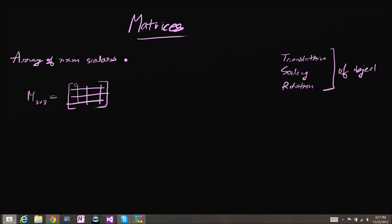What it means by scalars is that they are all going to be scalar values such as 1, 2, 3, 3, 2, 1, 0, 0, 7.